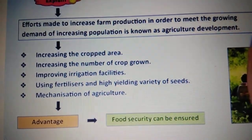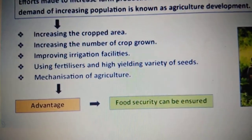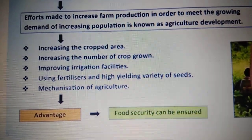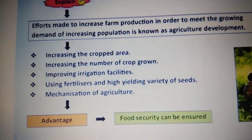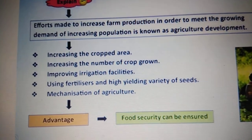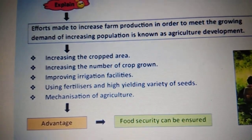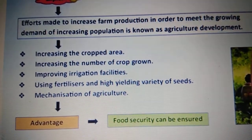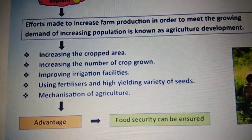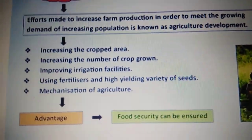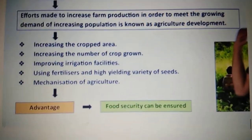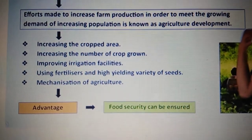Another method is mechanization of agriculture — everything manually doesn't work, we need to use more and more machines. The advantage of all this is that food security will be ensured for all. Food security means when all the people in the country have sufficient, safe, and nutritious food to eat, so that they can lead a healthy and active life — not only food to eat but sufficient, safe, and nutritious food at an affordable price.